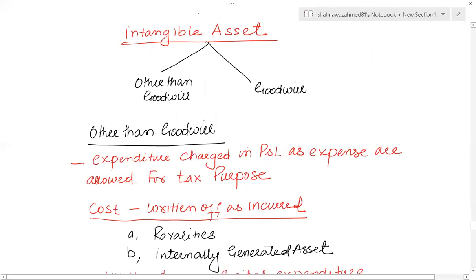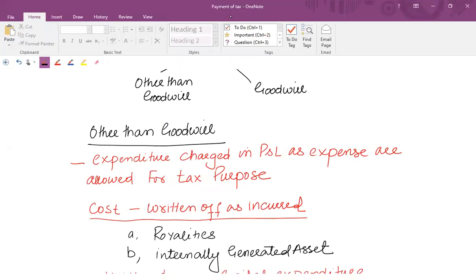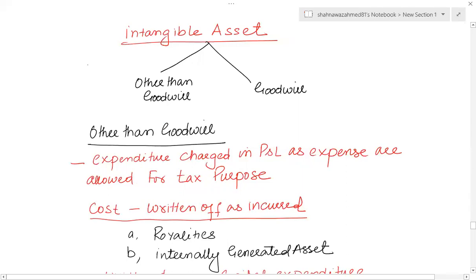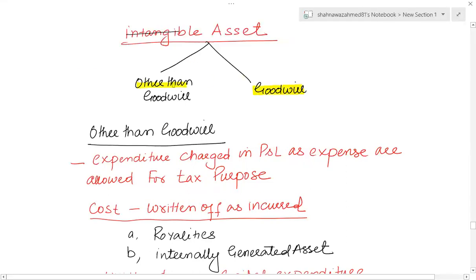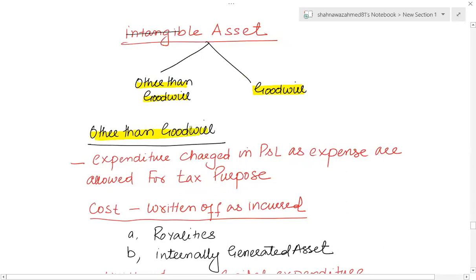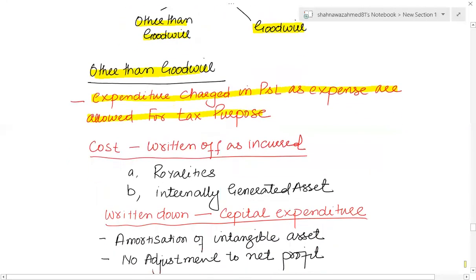Now let's talk about the treatment of intangible assets. We classify intangible assets into two types for tax purposes: goodwill and other intangible assets (not goodwill). For assets other than goodwill, whatever expenditure is charged in the profit and loss account against an intangible asset is allowed for tax purposes — the accounting expense is the same as the tax expense.